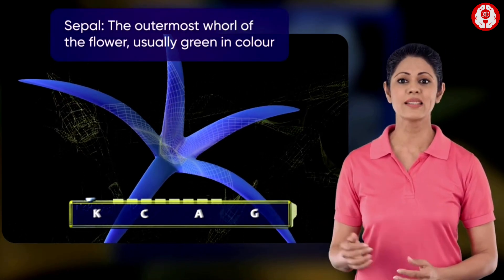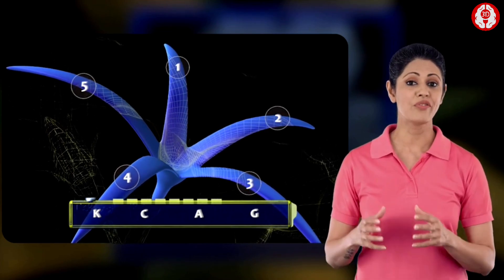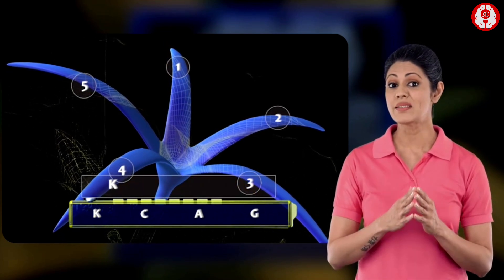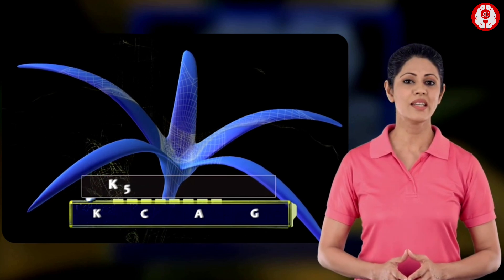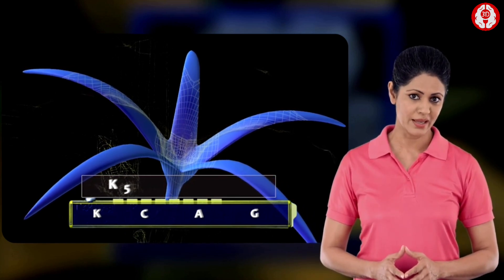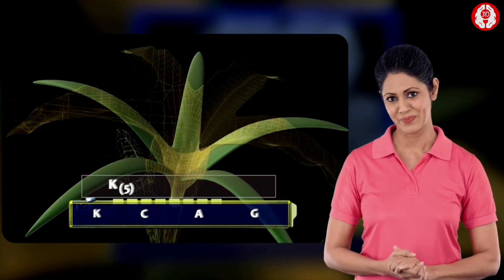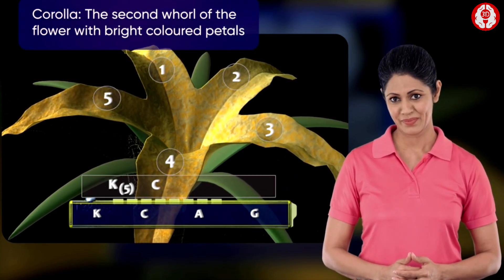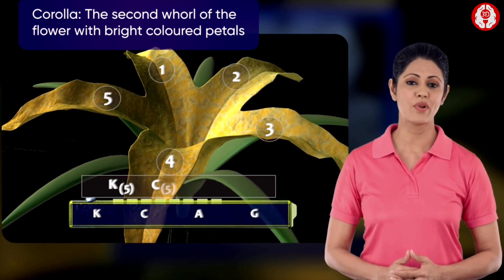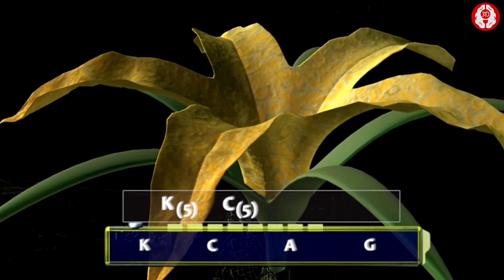The number of sepals in the calyx is given by the symbol K. Thus a flower with five separate sepals would be symbolized by K5. The degree of fusion of sepals can be indicated by circling the sepal number. The corolla is symbolized by the letter C, and the degree of fusion is represented by circling the petal number.